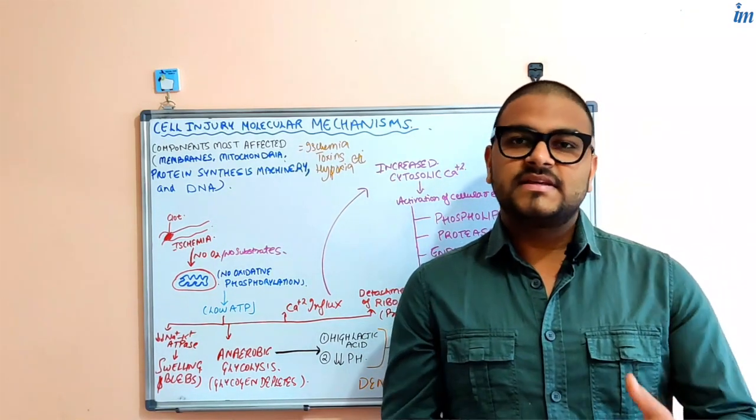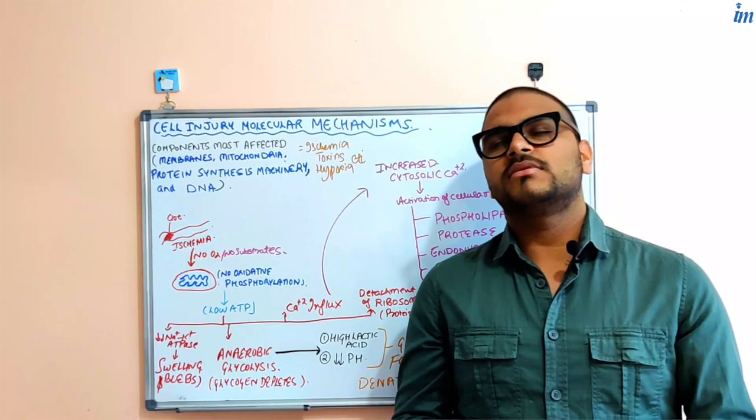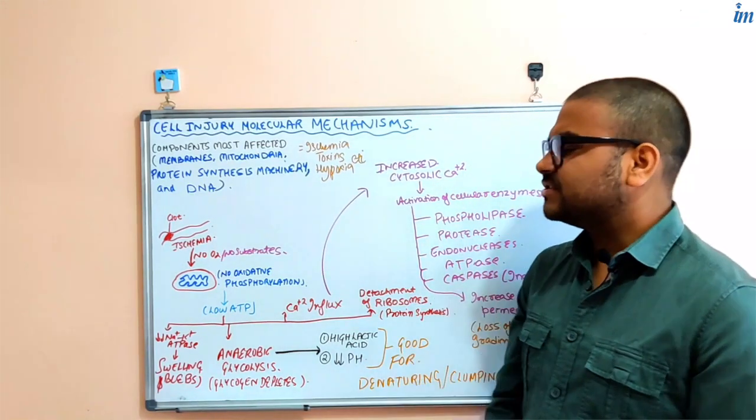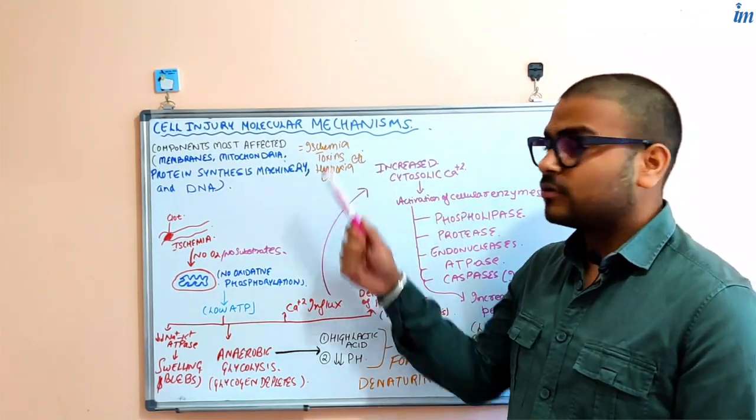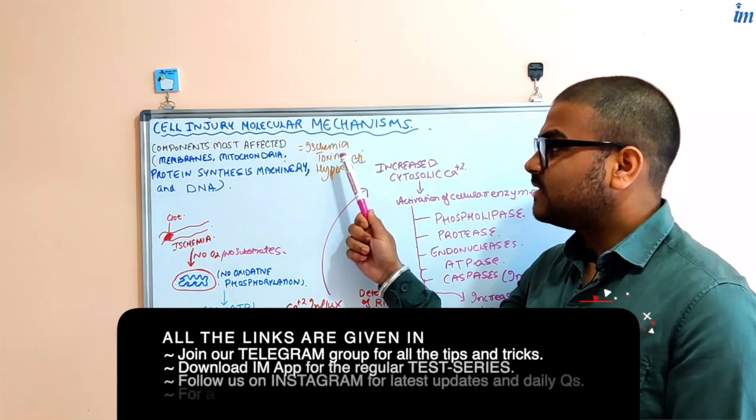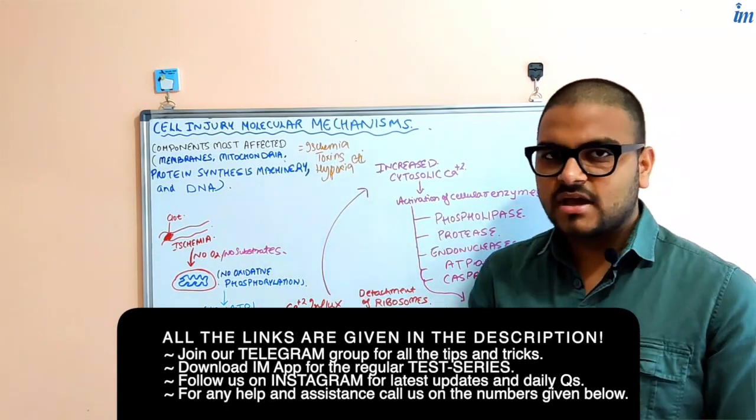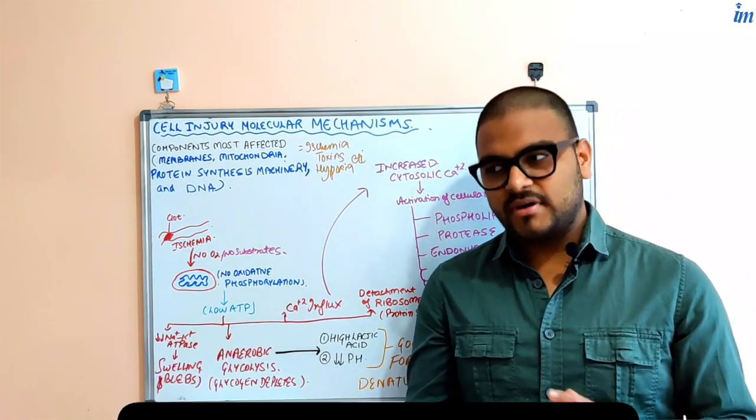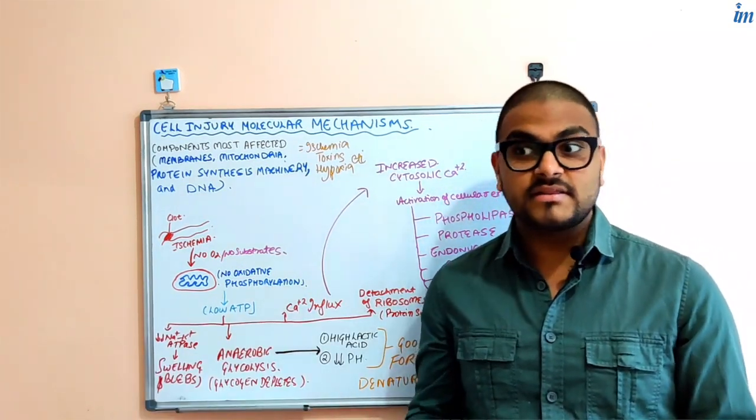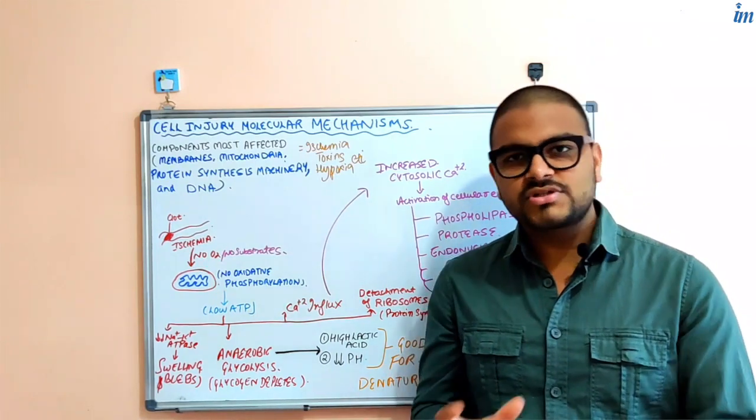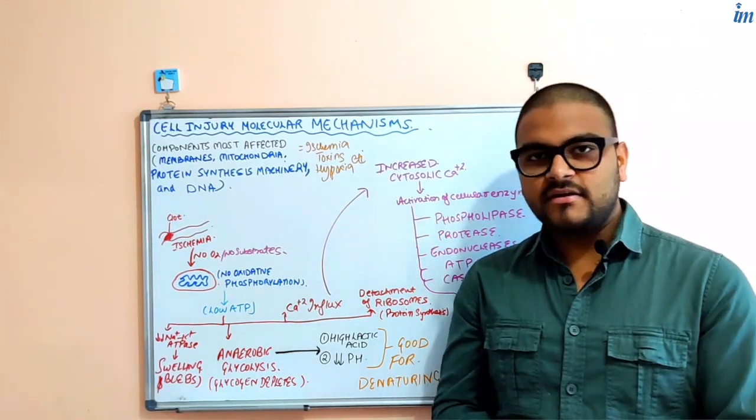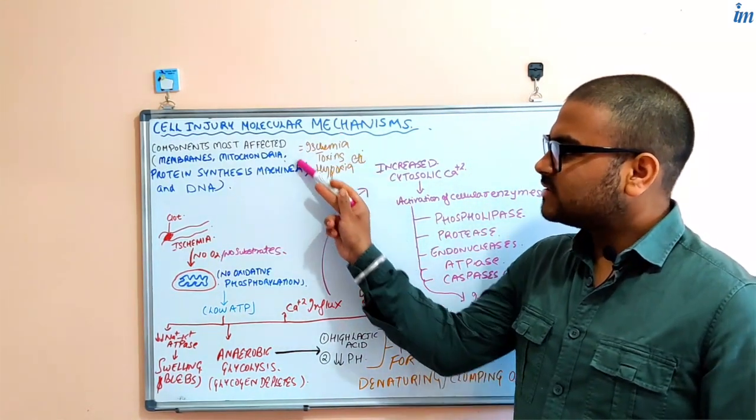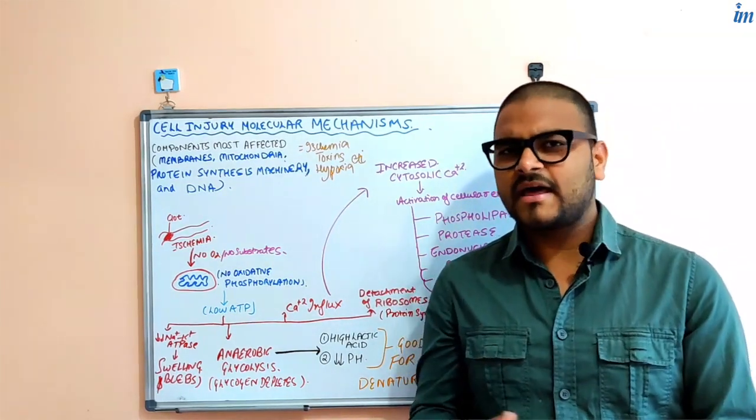Now we will talk about whenever the cell is exposed to any type of agents that can cause injury - ischemia, toxins, hypoxia. There are certain components, certain organelles in the cell and certain structures that are affected when the stress is there, when some damaging agents are there.